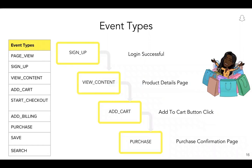Moving on to event types, you can fire different event types on different pages or on different actions like the click of a button. For example, you can fire the sign-up event on the registration page of your website when the user finishes signing up successfully. Then view content when the user visits the product details page of a product. Add to cart when they click on the add to cart button on the product page. And finally, the purchase event on the purchase confirmation page when the user successfully finishes payment and buys the product.